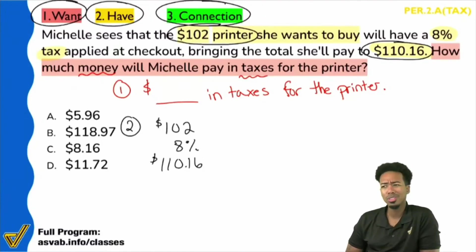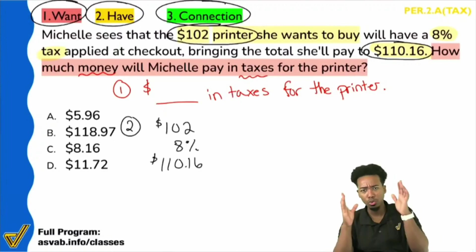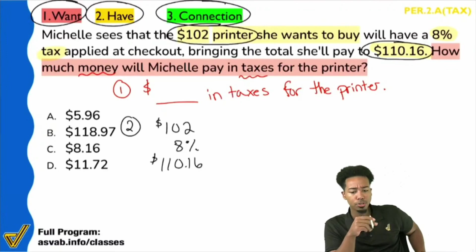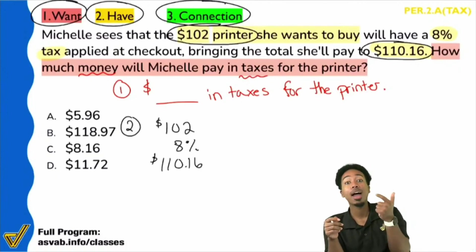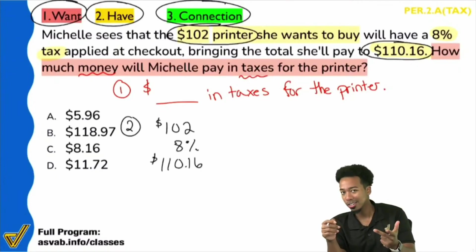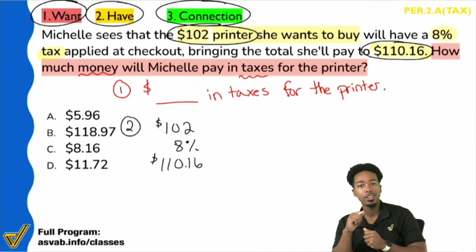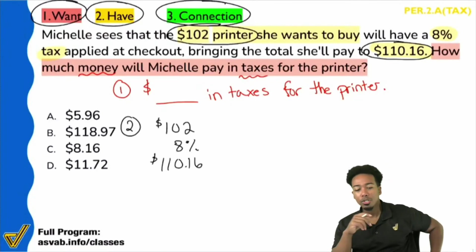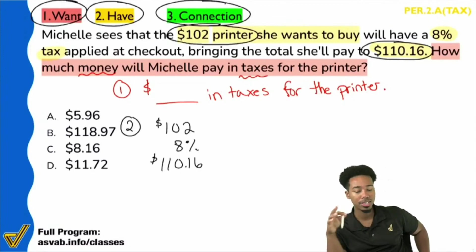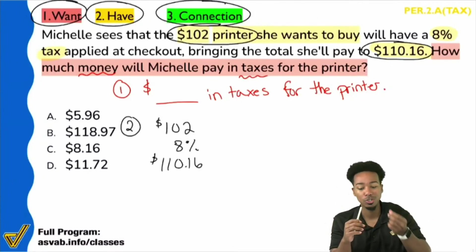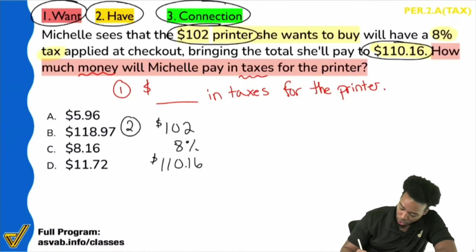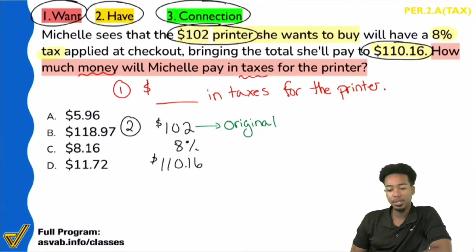Let's break down what those values mean. We broke things down by original amount, the amount of the tax, the percent of the tax, and the final price. So the $102 — reading around the words, Michelle sees the $102 printer she wants to buy will have a tax applied and then she'll pay this much. The $102 is the original cost, the amount before taxes.